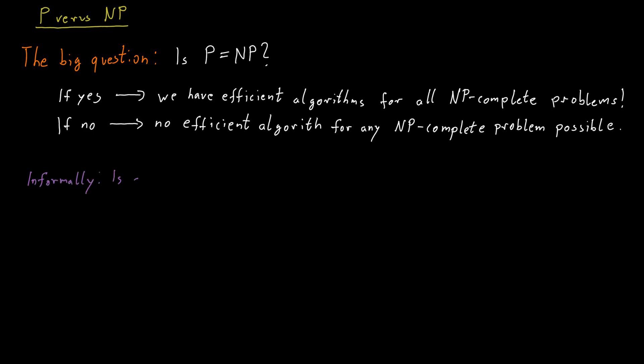Informally, what P not equal to NP really means is that there's a difference between checking a proof and coming up with a proof. So one way of thinking about this is, say you are given a homework assignment and you're asked to prove some theorem, then you might find this quite difficult.